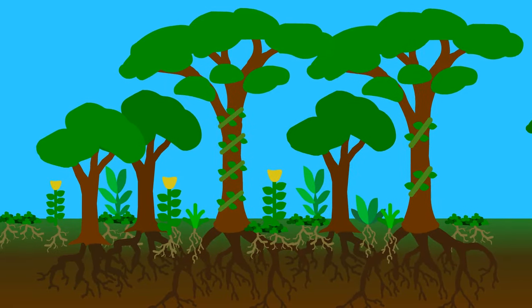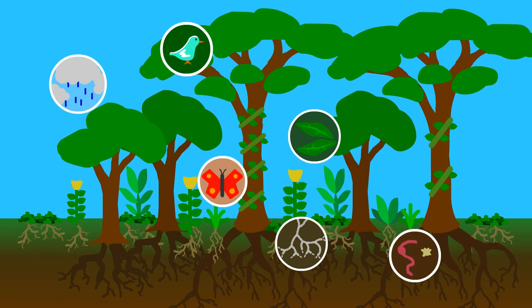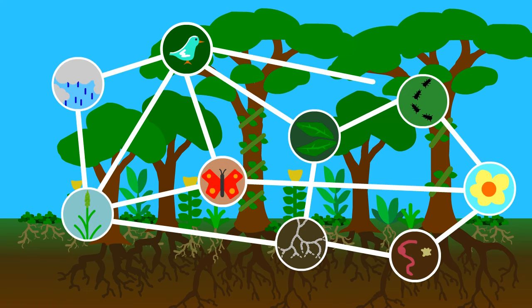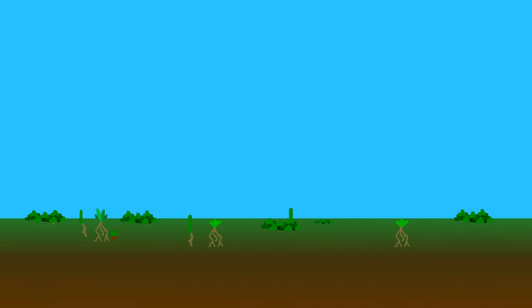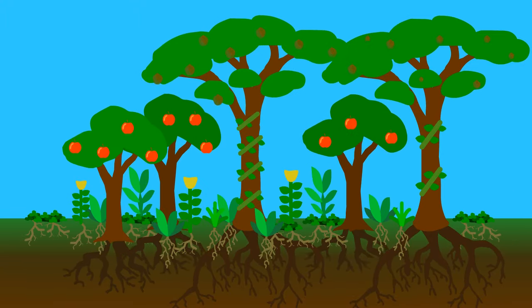It always starts with observing a local forest and the relationships between everything in it, the plants, the animals, the fungi, the landscape, the soil, the water, and then recreating these relationships in a way that's just as ecologically resilient, but produces more food.